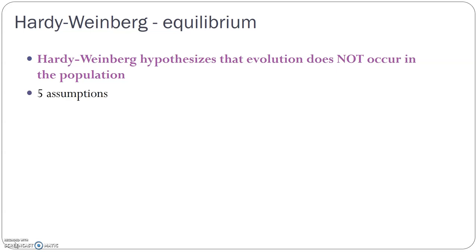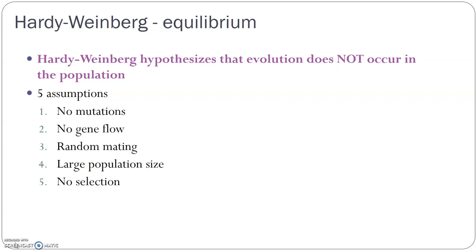There are five assumptions for Hardy-Weinberg. If the equilibrium holds, those five things can't happen: mutations cannot happen, selection cannot happen, gene flow cannot happen, random mating must be happening instead of mate choice, and we must have a large population size — meaning no bottleneck effect like we discussed in the first video. If none of these things happen, then evolution can't happen.